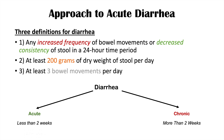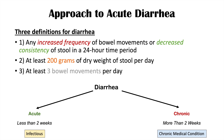Why do we use these categories? With regards to acute diarrhea, if it's new and has been going on for less than two weeks, it's more often caused by an infectious cause — a bacteria, a virus, or a protozoa. With chronic diarrhea, lasting more than two weeks, it's more likely to be a chronic medical condition like Crohn's disease, ulcerative colitis, or irritable bowel syndrome. So it's important to have these categories.